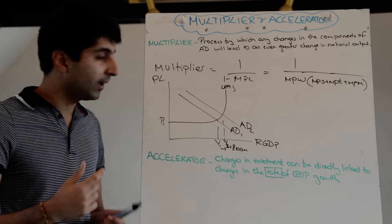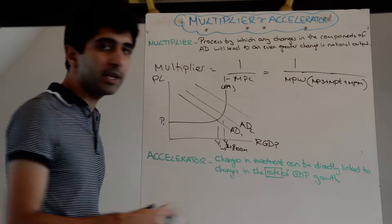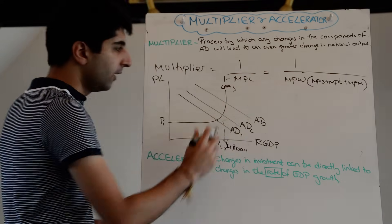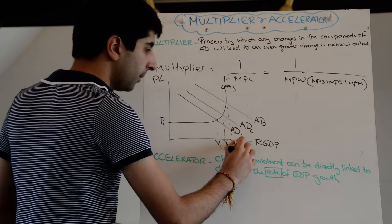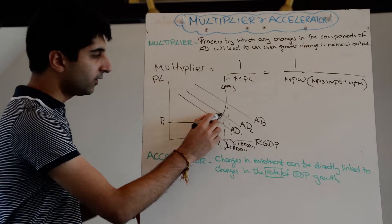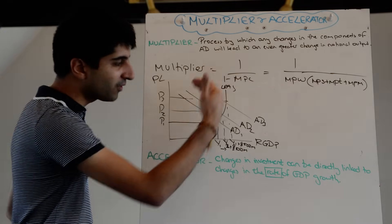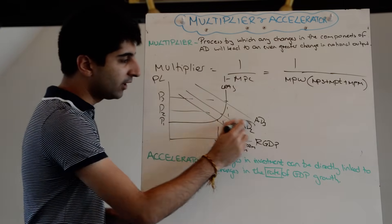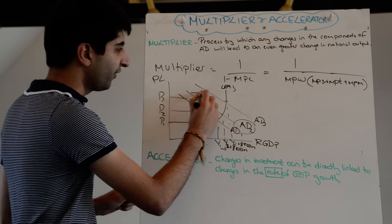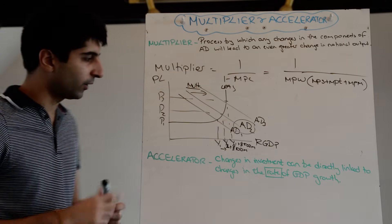That increase from Y1 to Y1 plus £100 million is just the government spending impact. But the multiplier effect means AD keeps shifting — income is being generated for somebody else, which will facilitate further spending — and we settle on an output level which is actually Y1 plus £500 million. You can see how AD keeps shifting to the right and you get a settling equilibrium much further to the right than the initial increase in spending, which only takes us to AD2. This final shift is the multiplier effect on the diagram.